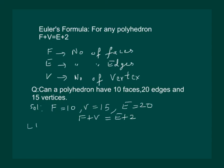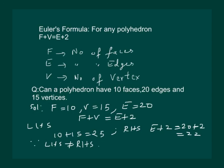So let us substitute in left hand side we get 10 plus 15 equal to 25. Let us check the right hand side E plus 2 means 20 plus 2 that's 22. So since left hand side is not equal to right hand side, that means the Euler's formula doesn't hold and such a polyhedron does not exist. We will write polyhedron cannot exist.